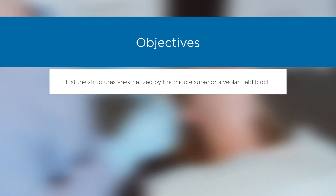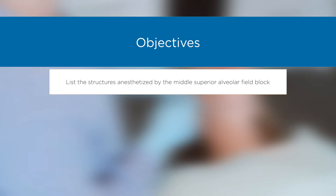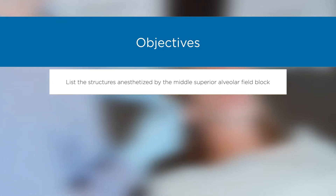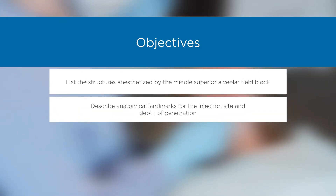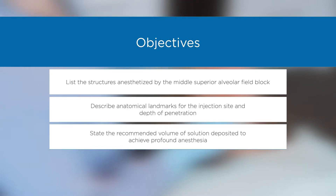Objectives: List the structures anesthetized by the middle superior alveolar field block. Describe anatomical landmarks for the injection site and depth of penetration. State the recommended volume of solution deposited to achieve profound anesthesia.